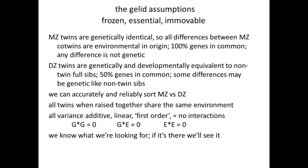Dominance is when one gene version is expressed regardless of what the other one is like. Epistasis is when one gene influences the expression of another gene elsewhere. An example: coat spotting in dogs and mice—there's one gene that determines whether there can be spots. If that gene says no spots, the other genes that determine number and size of spots don't matter. That's epistasis: this gene says no spots, no matter what the other genes say about how big your spots are. And we have to assume that we know what we're looking for, and that if it's there, we'll see it.